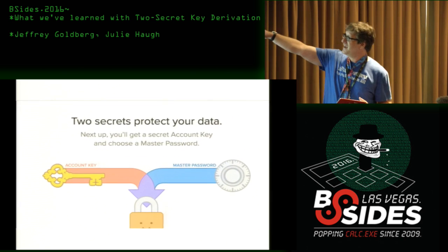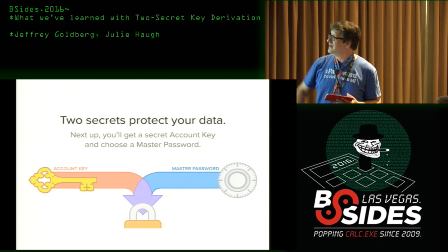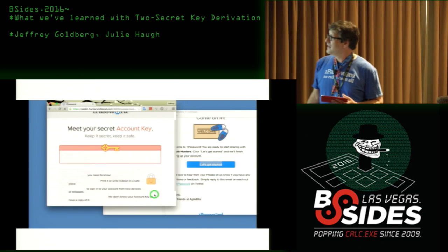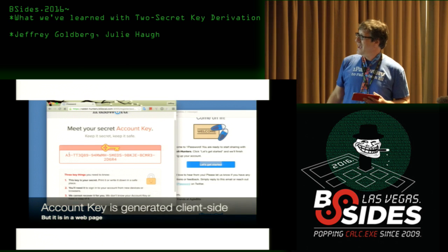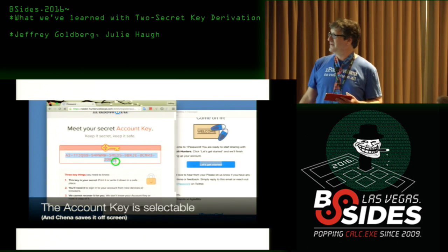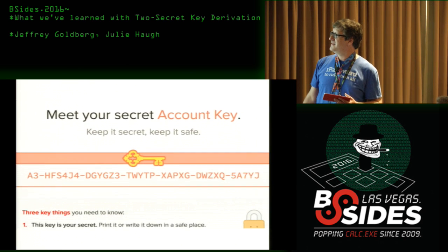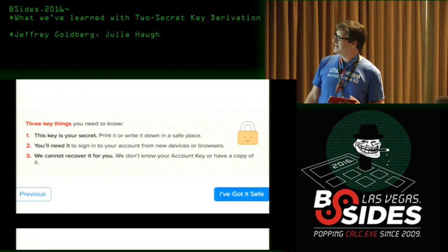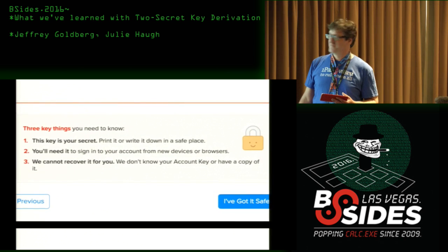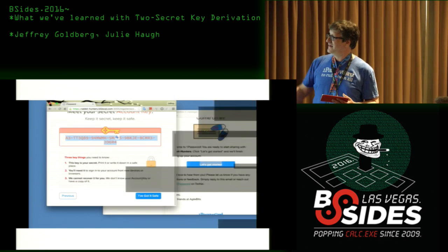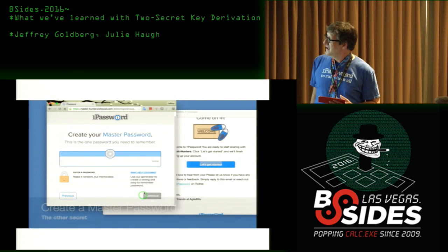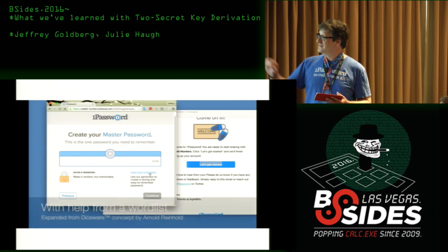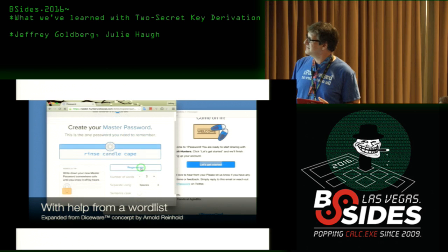First presentation of two secrets to protect your data. You are given your account key. The first part of it is non-secret information, but the bulk of it is secret — there's actually an account identifier at the beginning. It was selectable; you saw a copy operation. She saved it somewhere.